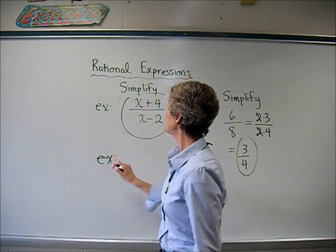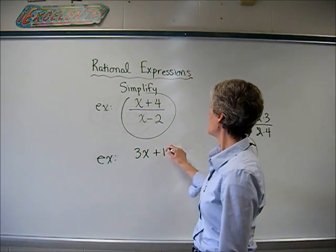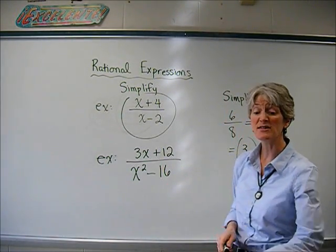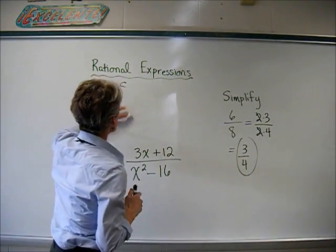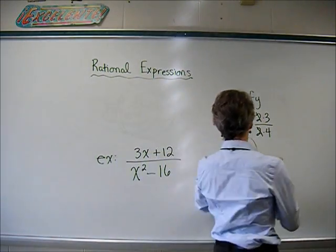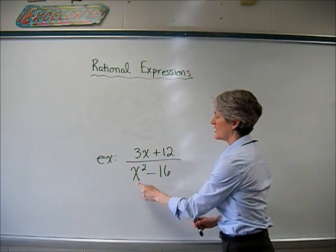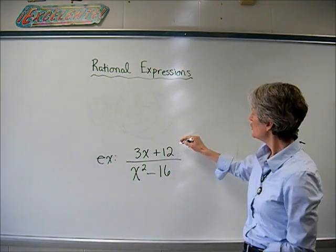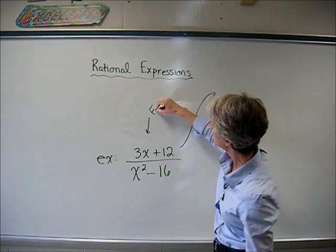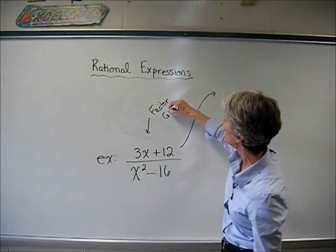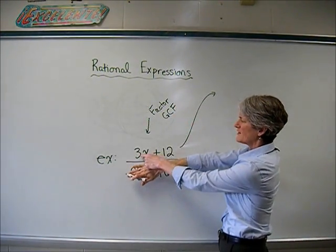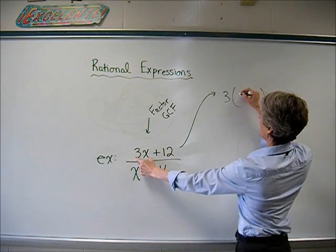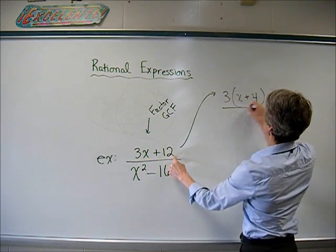Let's say I have 3x plus 12 over x squared minus 16, and I want to simplify that. I have two terms in the numerator and two terms in the denominator — they're not identical — so I'm going to have to factor. Looking at the numerator, I can factor using a GCF, the greatest common factor. What is common to both terms? A 3. So I divide out a 3 and I'm left with x plus 4. I have just factored the numerator.